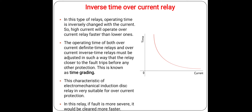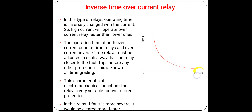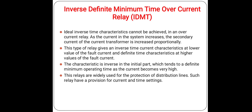When the fault current is at a lower value, the operating time will be large. As the fault current increases, the operating time reduces. When the fault current is very large, the operating time is much lesser. This shows the inversely proportional relationship between operating time and fault current value. Next is the Inverse Definite Minimum Time — IDMT — overcurrent relay.